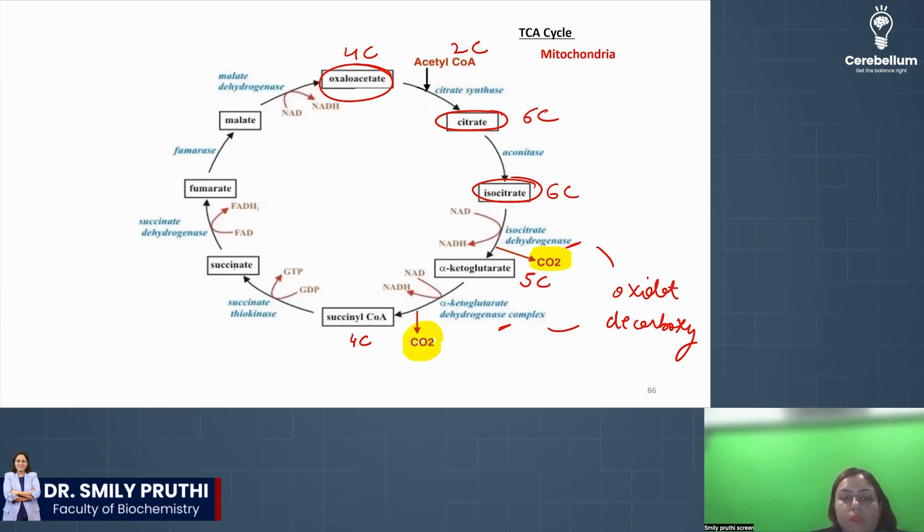Now, succinyl CoA gets converted to succinate. So this CoA is a high energy bond. When CoA is broken, then the energy is released. That can be stored and converted in the form of ATP or GTP. Whenever ATP or GTP formed at a step, this is substrate level phosphorylation step. And succinate is formed. So there is only one substrate level phosphorylation step in TCA.